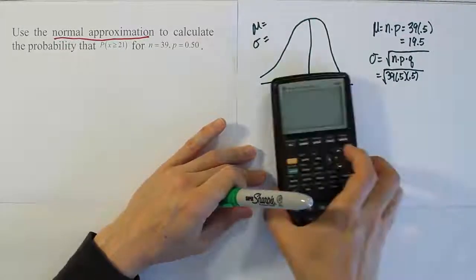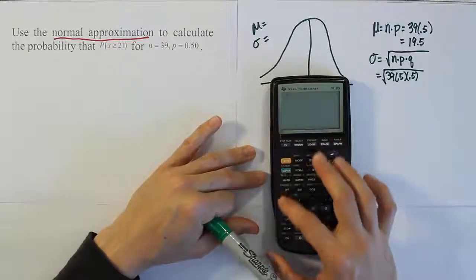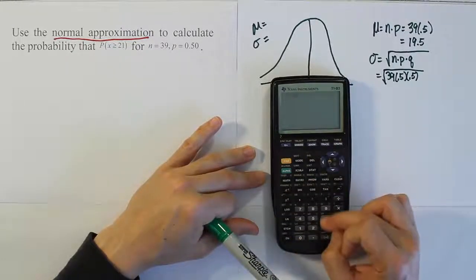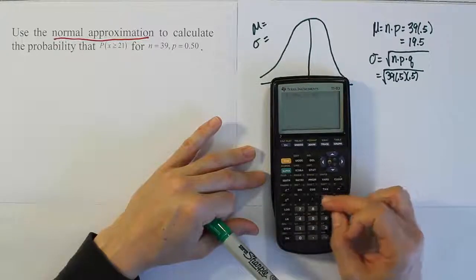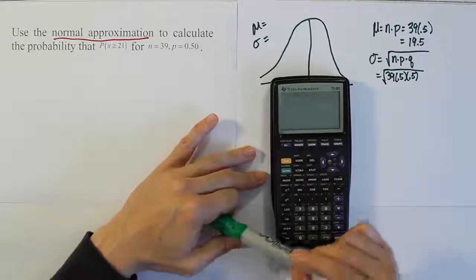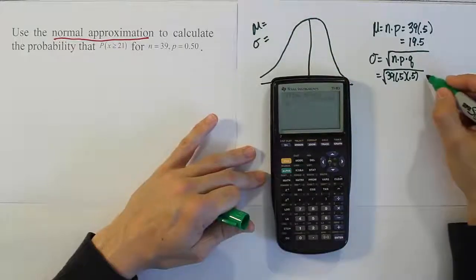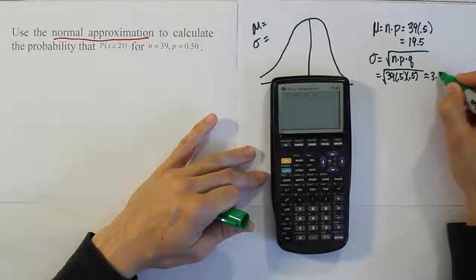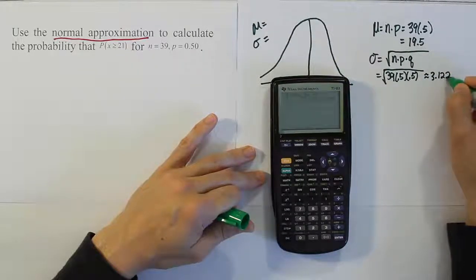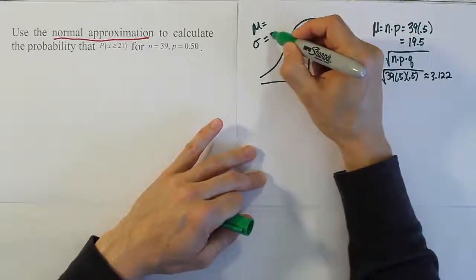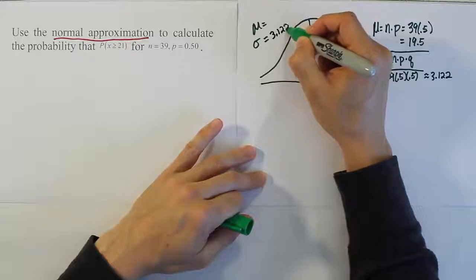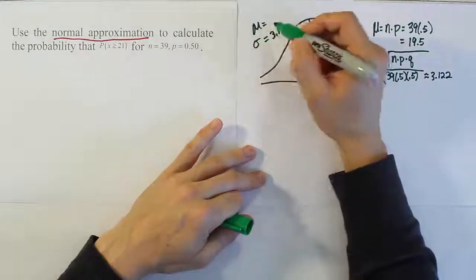Let's work that out in our calculator and see what we get for the standard deviation. So we'll have the square root of 39 times 0.5 times 0.5, close up your parentheses, and we get 3.1, approximately 3.122. So we'll give it three decimal places there and plug that in for our standard deviation: 3.122. The mean here is 19.5.